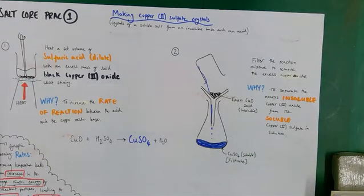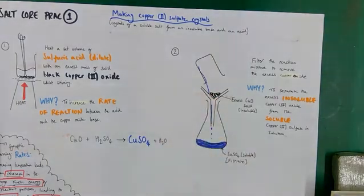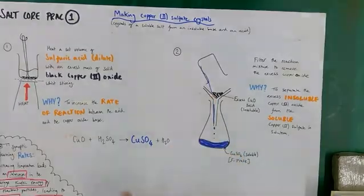This gives us pure copper sulfate solution without solid, which is better for getting pure crystals. Collect the filtrate and discard the residue—the excess copper oxide solid left on the filter paper.